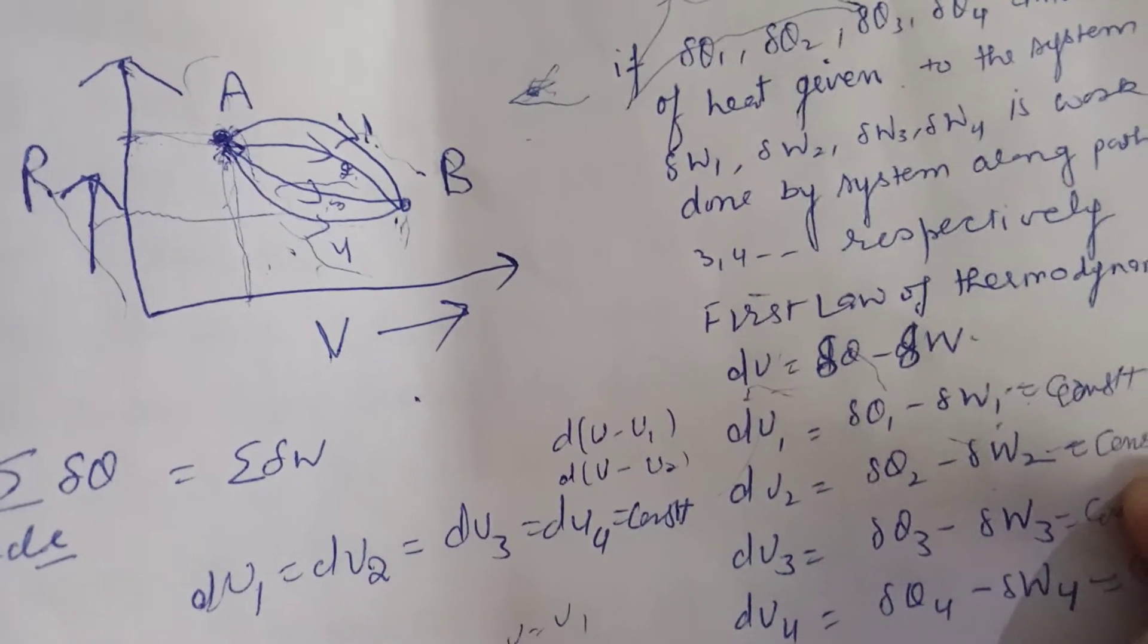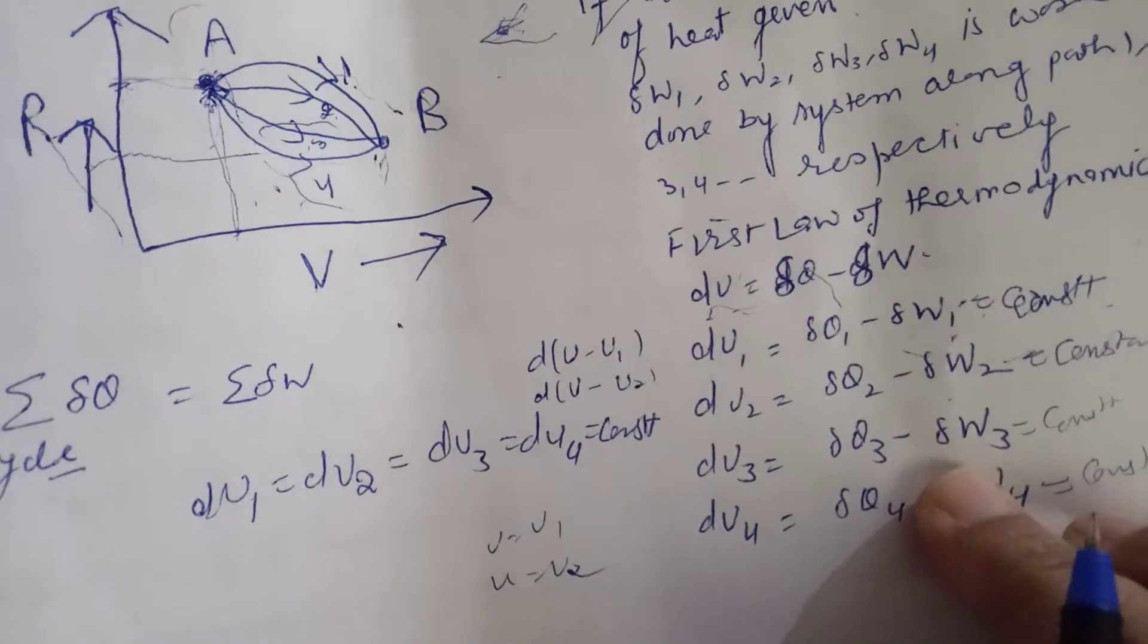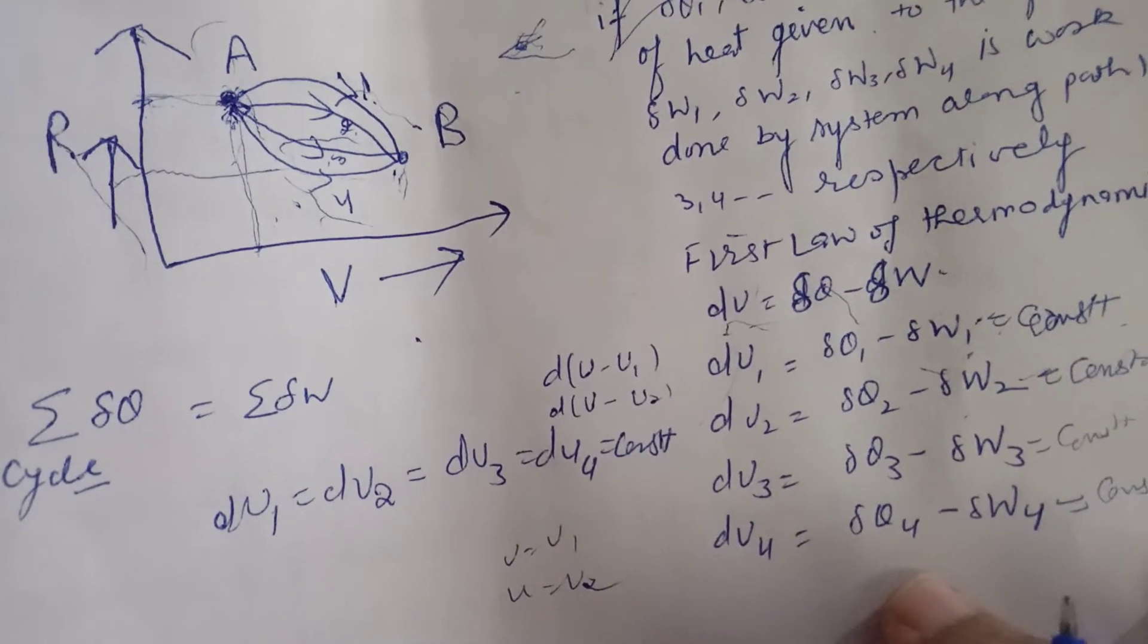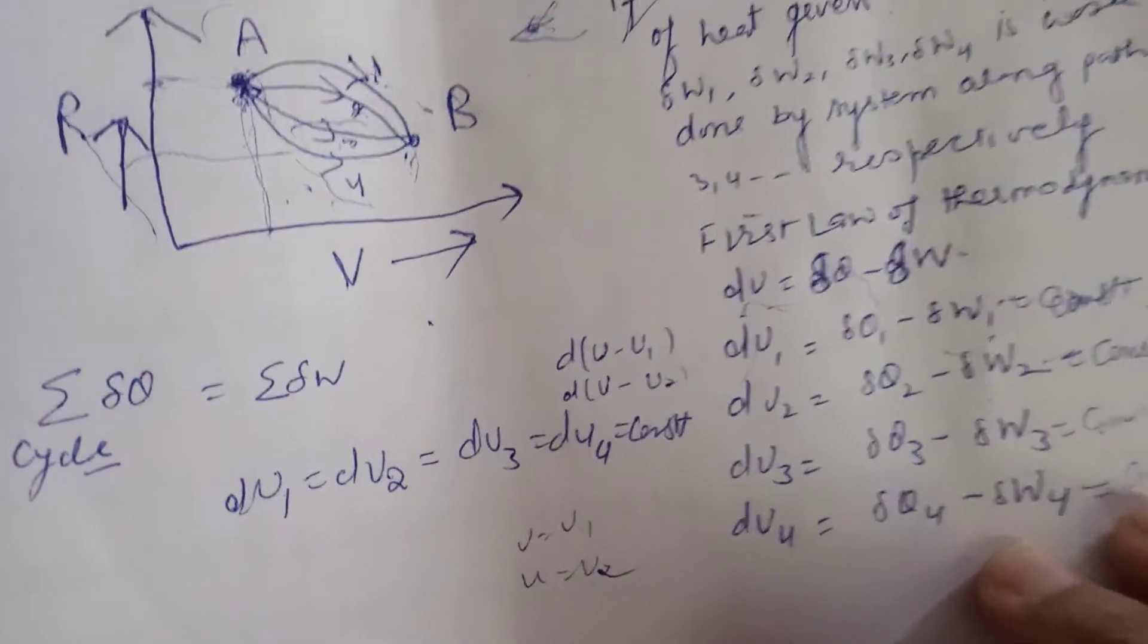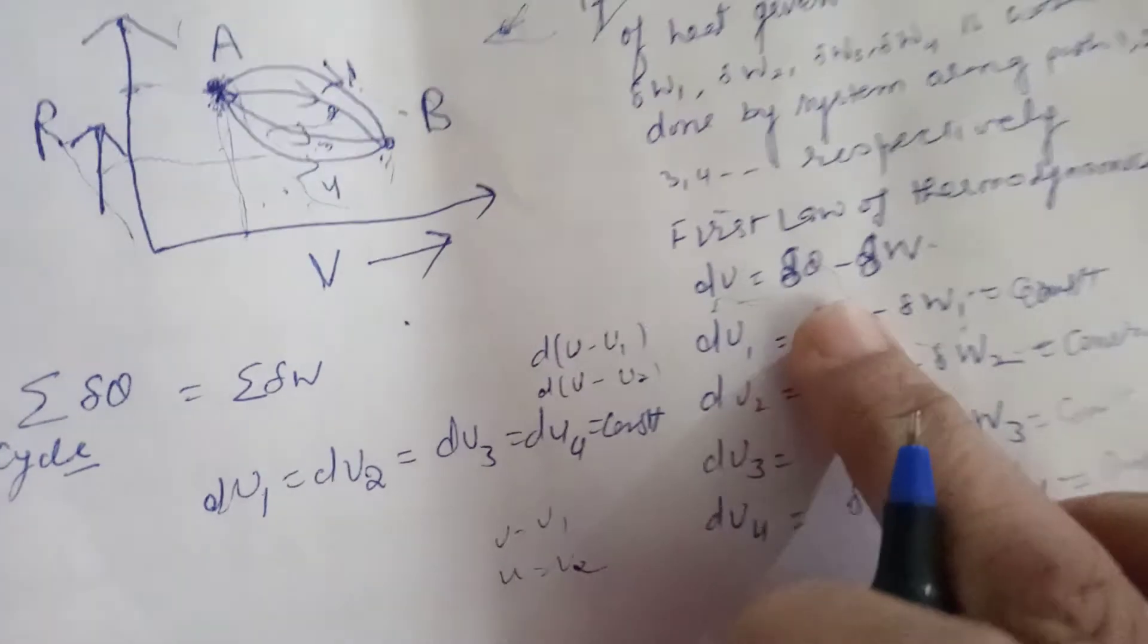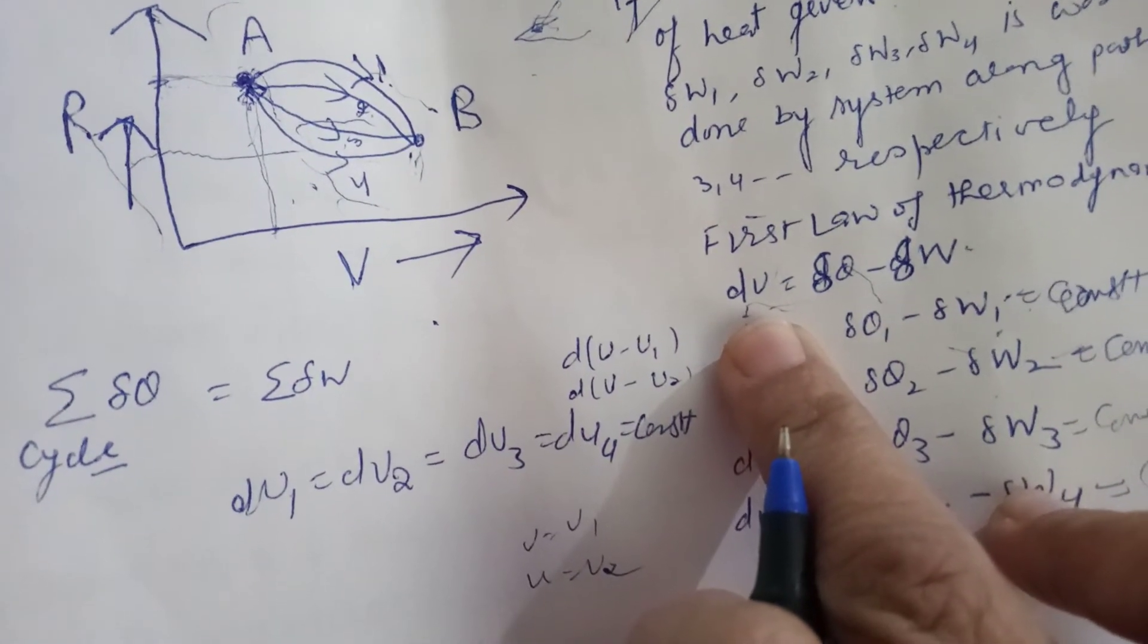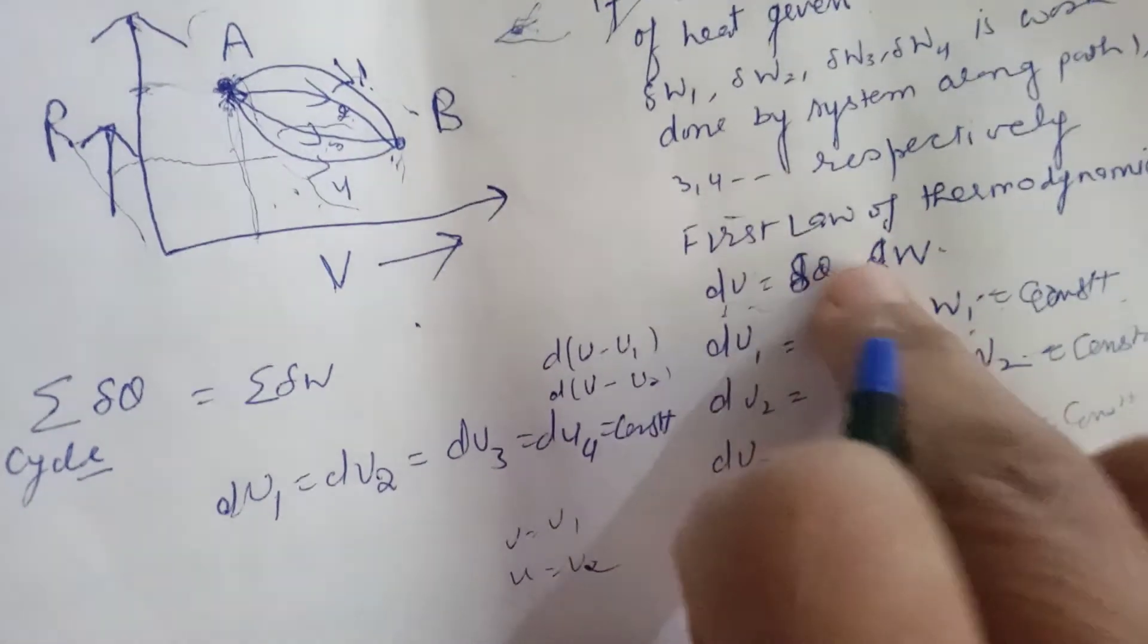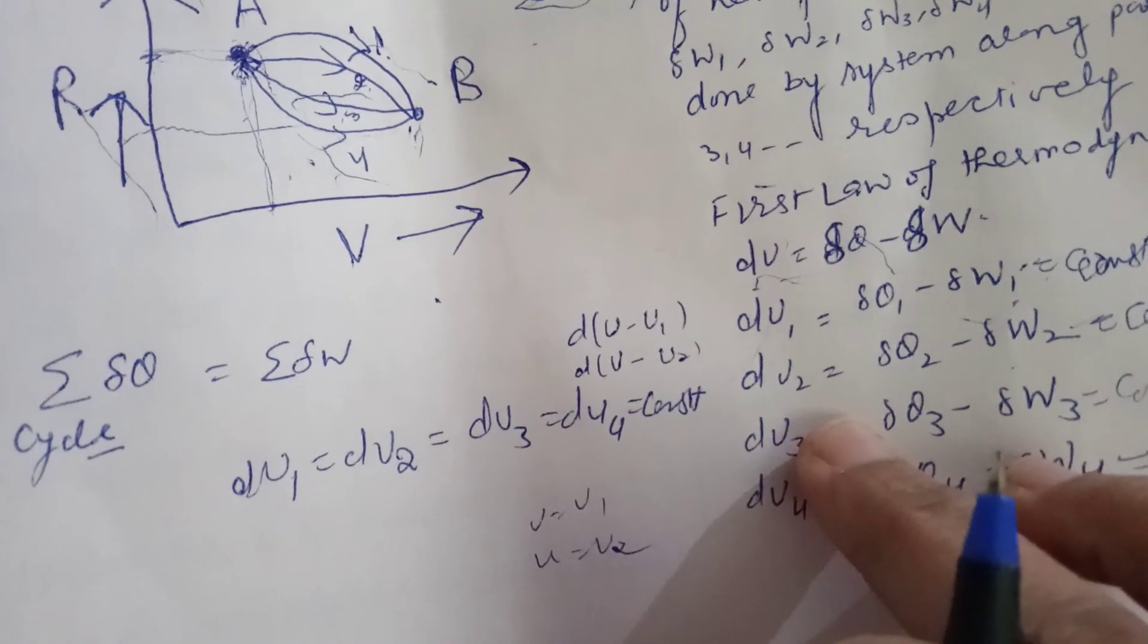Similarly for path 3, we get DQ3 minus DW3 is a constant. For path 4, del Q4 minus del W4 is constant. From the first law of thermodynamics, we can conclude DU1 equals DU2.